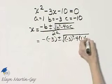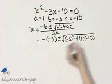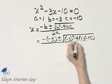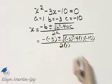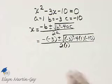Times C is negative 10. And this is all over 2 times A, and A is 1. And there we have it. Let's simplify.